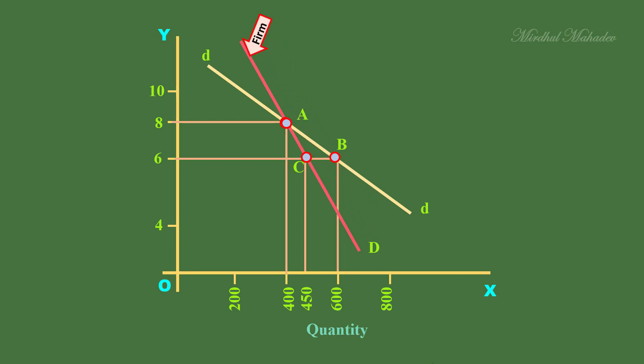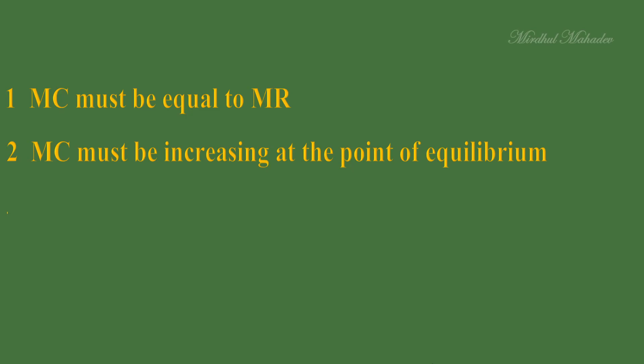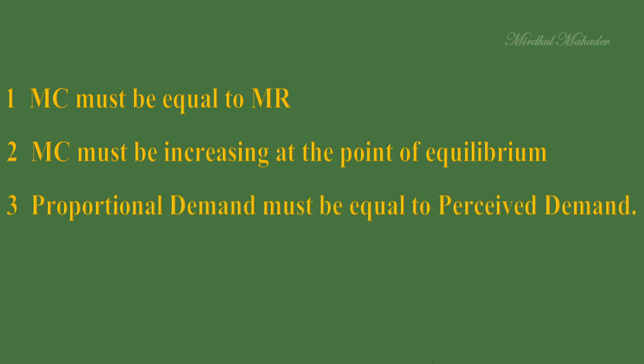A firm has to satisfy three conditions to be in short run equilibrium. One, marginal cost must be equal to marginal revenue. Two, marginal cost must be increasing at the point of equilibrium, or MC curve must cut the MR curve from below. Three, proportional demand must be equal to perceived demand.